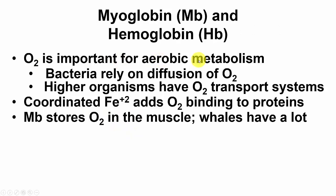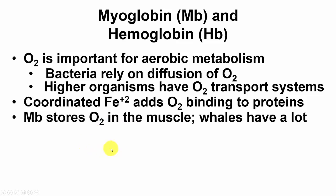O2 is important for aerobic metabolism. Bacteria rely on diffusion — they're small and can do that. Higher organisms must have O2 transport systems, usually coordinated with Fe2+ (ferrous iron) that enables O2 binding to proteins. Myoglobin stores oxygen in the muscles; whales need a lot of it so they can dive deep.